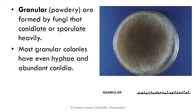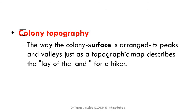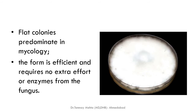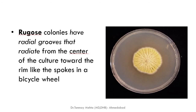Granular or powdery colonies form when fungi produce abundant conidia and hyphae. Topography refers to the view from the top — the arrangement of the colony surface like peaks and valleys on a topographic map. Flat colonies predominate in mycology and are the most common. Rugose colonies have radial grooves radiating from the center like spokes of a bicycle wheel.